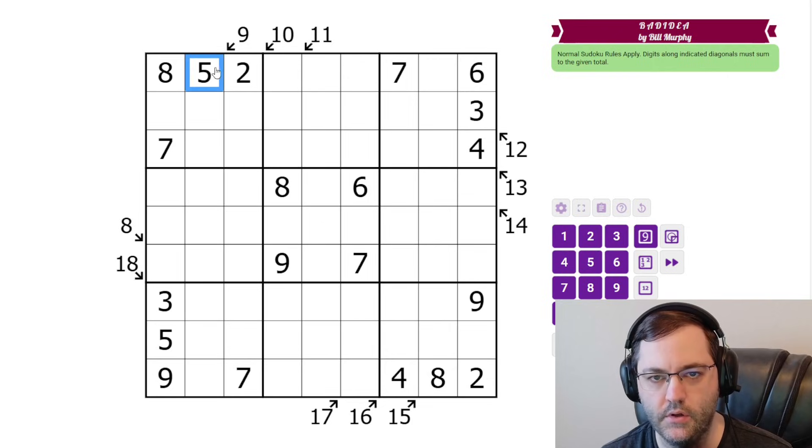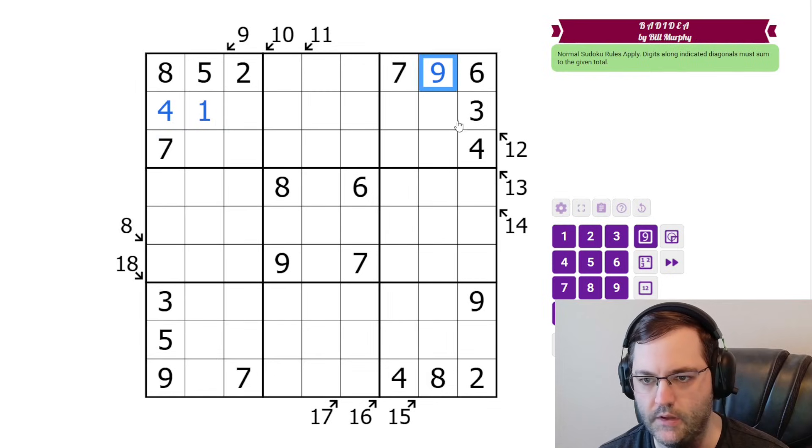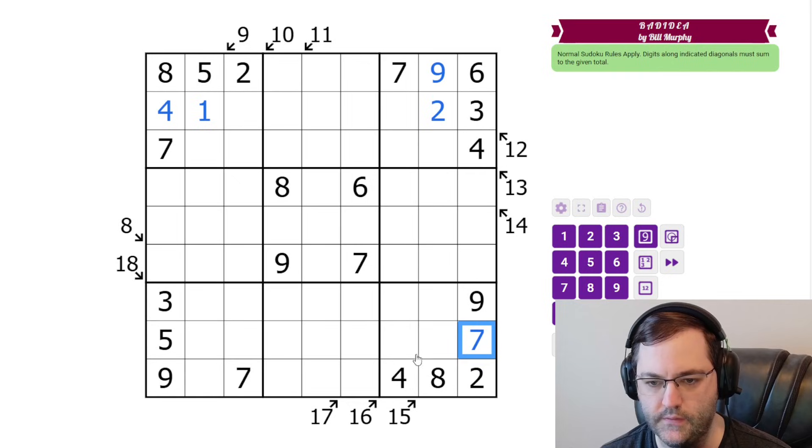Let's start in this corner. So we have a 9. The given 5 means this is a 4. We have a 10 with 7 and 2, we need a 1 there. I think we're going to be completing all of the 2 and 3 cell clues first. 13 with 7 and 4 needs a 2. 15 needs a 7. We need a 3 here. And then this 18 is going to be an 8. So that's all of those done.